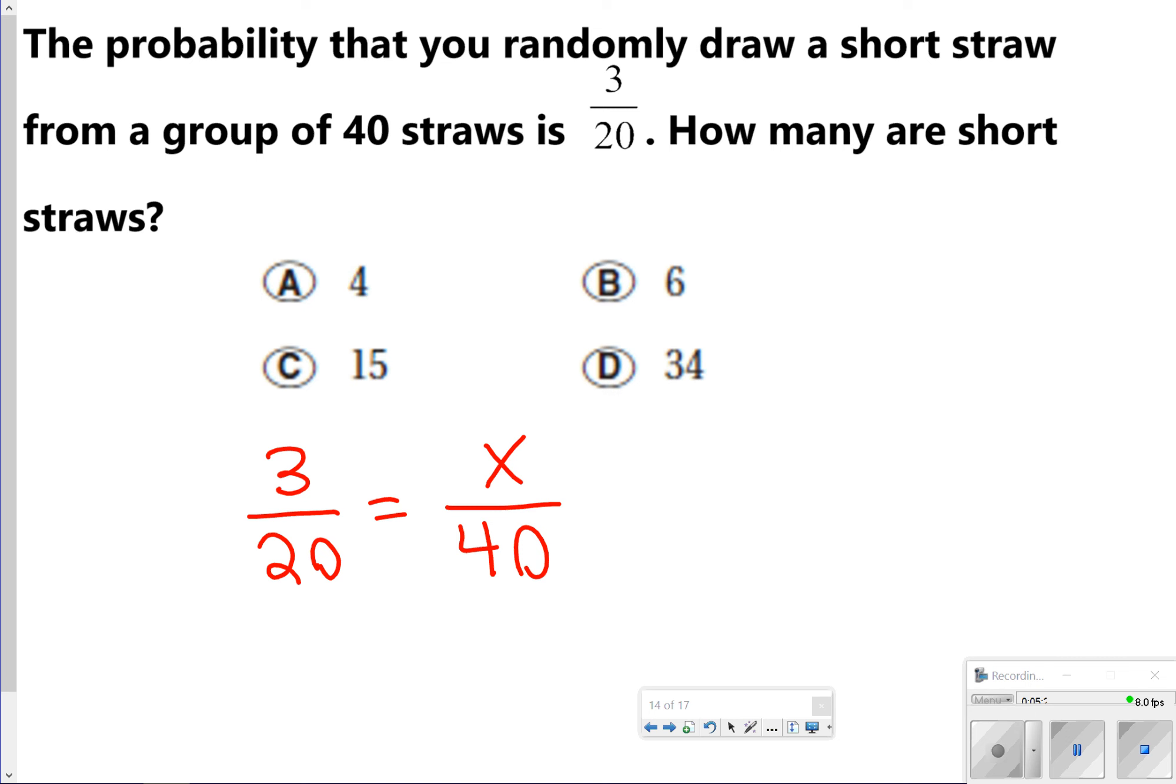then you can easily see the relationship between the fractions or cross-multiply to solve. Most of you will see cross-multiplying here. 20 times x is 20x. 3 times 40 is 120. And when you divide both sides by 20 to solve for x, you get 6. So we would answer 6 for that option.